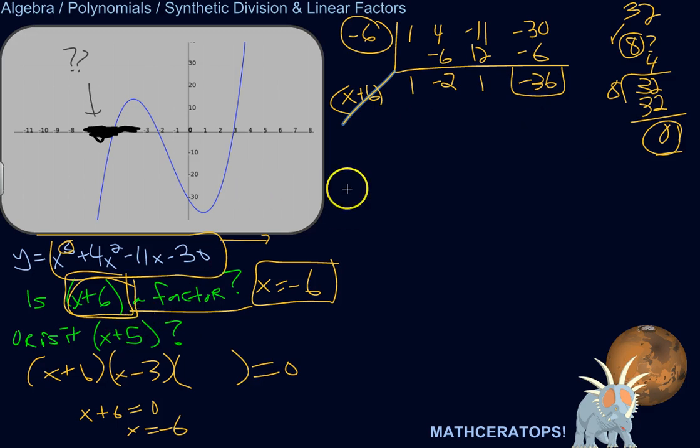So let's try 5. x plus 5. Let's see if that is a linear factor. So that would be saying that the root is negative 5. So x plus 5 equals 0. Solved for x. Minus 5 minus 5. x equals negative 5.